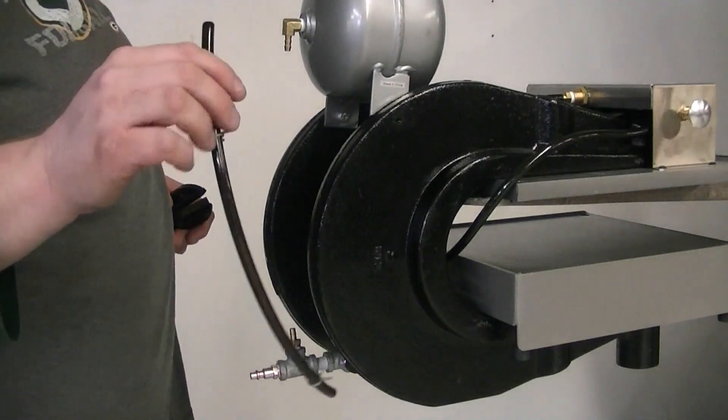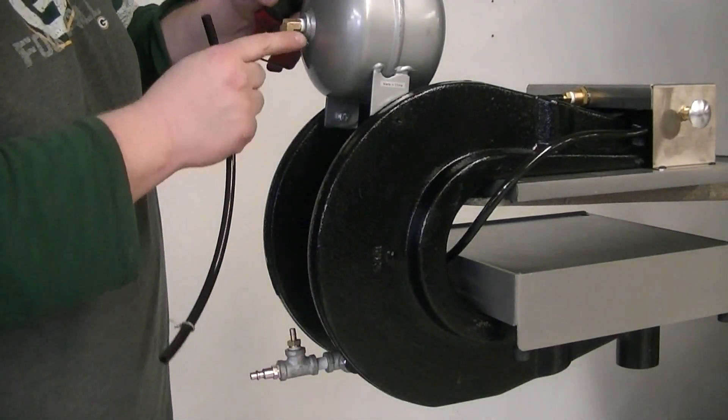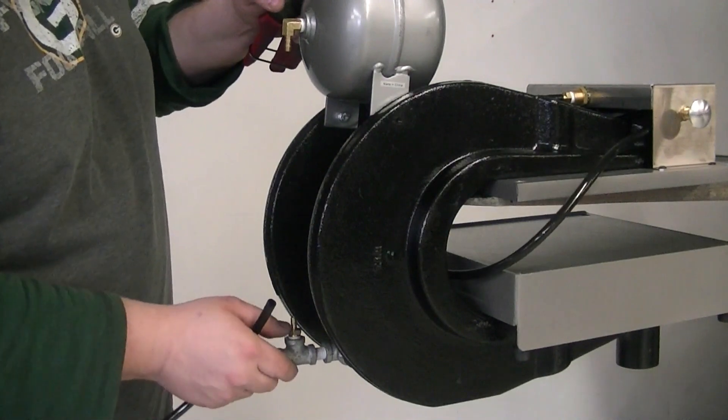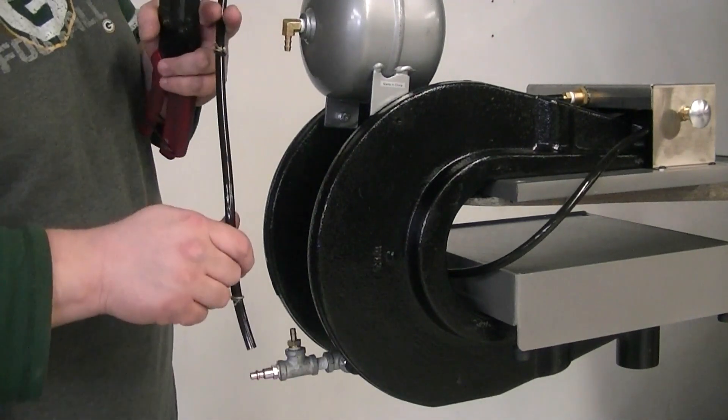Next, take your other length of hose, put it to the barb fitting on your tank, and connect it to the barb fitting on the accumulator system. We give it to you too long so you're able